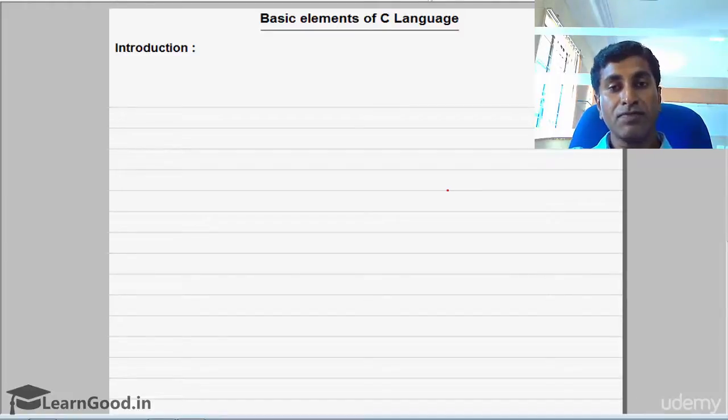Not only that, we have to also specify what type of value we are going to store in that memory location. For that, we have data types. Like this, all these small components which are required for writing every C program we are going to discuss in this chapter. We'll first start this chapter with